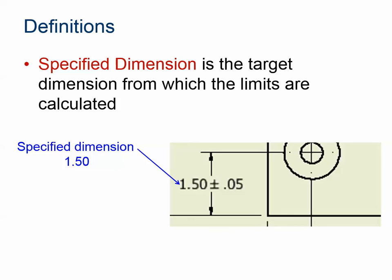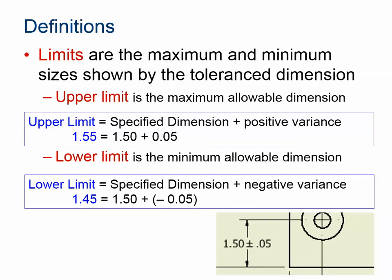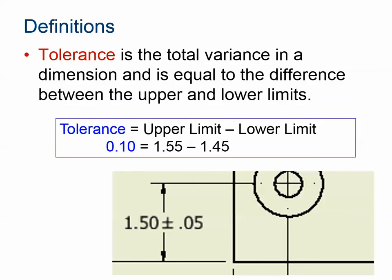The specified dimension is the target dimension from which the limits are calculated on your tolerance. So 1.505 is your specified target dimension — that's what you want to achieve, but you're allowed a variance of in this case five hundredths of an inch. Limits are the maximum and minimum size shown by the tolerance dimension. If it's a limit dimension, the limits are given directly, but if not, they're easy to calculate. You take the specified dimension and add or subtract the variance. So the upper limit is 1.50 plus 0.05, giving 1.55, and the lower limit is 1.50 minus 0.05, giving 1.45. The tolerance itself is the difference of those two limits: 1.55 minus 1.45 equals a tolerance of 0.10, meaning you're allowed a tenth of an inch of variance — 0.05 in either direction.